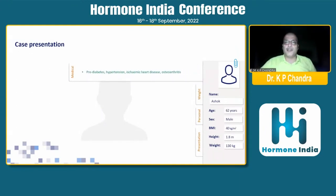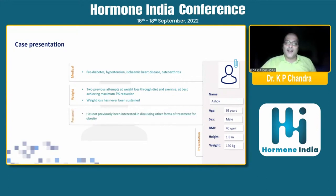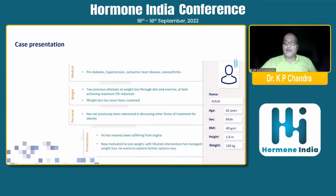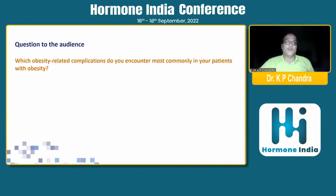The patient has pre-diabetes, hypertension, ischemic heart disease, and osteoarthritis. He had two previous attempts to decrease weight, at best achieving 5% weight loss which was not sustained, and he has not previously been interested in other forms of treatment. His BMI is 40, weight is 130 kg. He recently suffered from angina and is now motivated to lose weight with lifestyle intervention, having managed 4% body weight loss. He wants to explore further options.